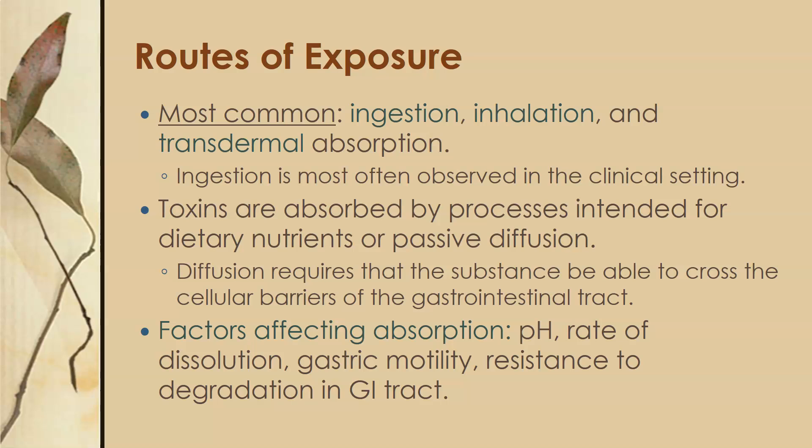The most common routes of exposure are ingestion, inhalation, and transdermal absorption. Ingestion is the most often observed in the clinical setting. Toxins are absorbed by the processes intended for dietary nutrients or via passive diffusion. Diffusion requires that the substance can cross the cellular barriers of the GI tract. Factors affecting GI absorption include pH, rate of dissolution into GI fluids, gastric motility, and resistance to degradation in the GI tract.